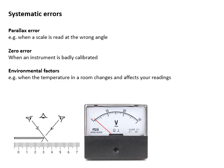If you're looking at it from above or below, that will cause a parallax error and that will affect every reading. A zero error - when an instrument isn't calibrated correctly. If you look at this voltmeter, when there's nothing plugged in it's reading 0.5 volts, so all of the readings of voltage are going to be 0.5 too big.